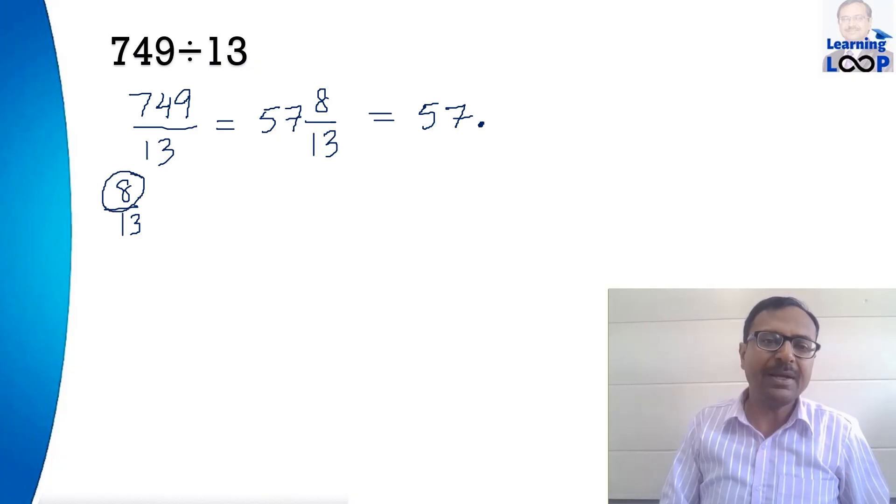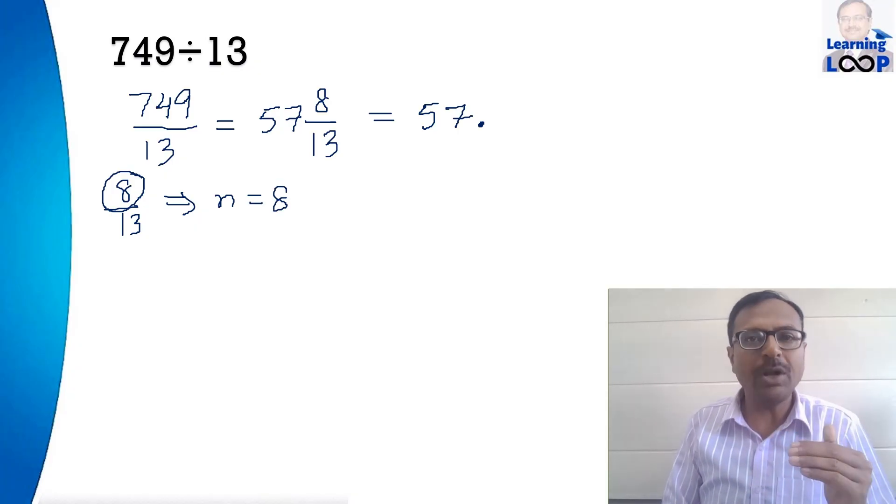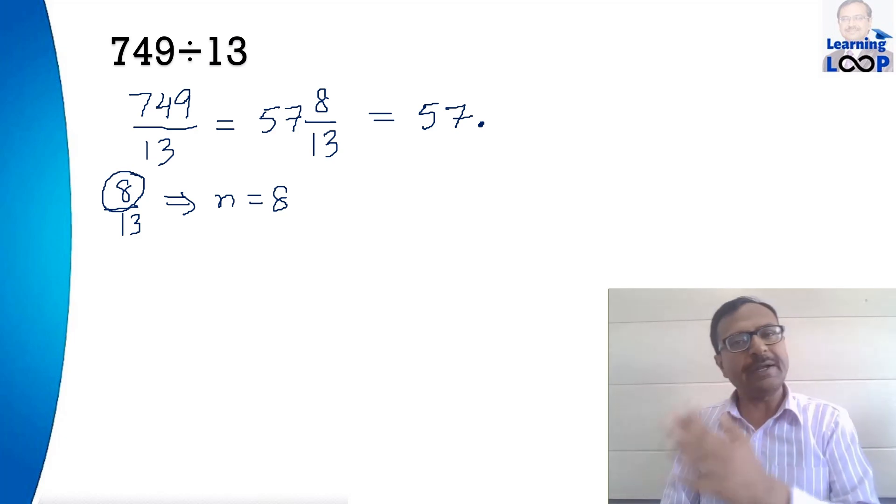I will consider that numerator as n and then I will multiply. There are some particular steps which are involved. So if you follow those steps, you will get the decimal part.